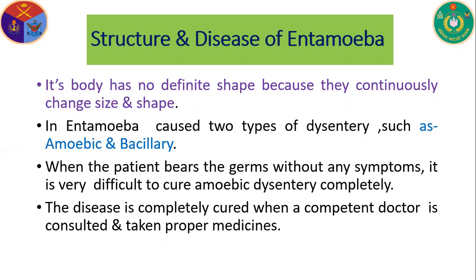Regarding the structure and disease of Entamoeba: its body has no definite shape because it continuously changes size and shape. Entamoeba causes two types of dysentery — amoebic and bacillary. When the patient carries the germs without any symptoms, it is very difficult to completely cure amoebic dysentery. The disease of Entamoeba can be completely cured when a competent doctor is consulted and proper medicine is taken.